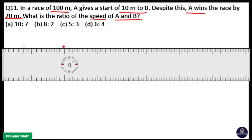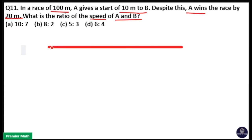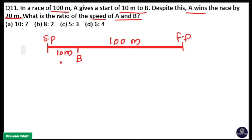Here, there is a race of 100 meters. This is the starting point and this is the finishing point. A gives a start of 10 meters to B, meaning when B finishes 10 meters, A starts the game.